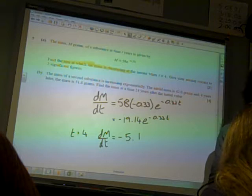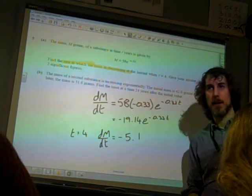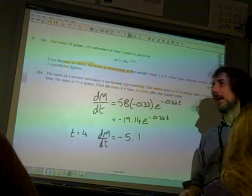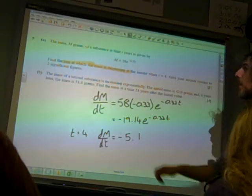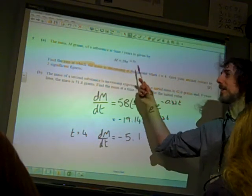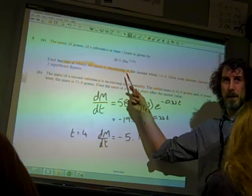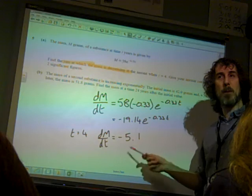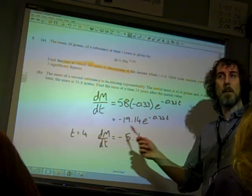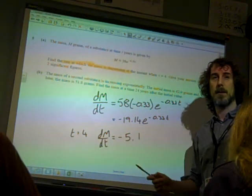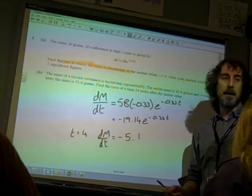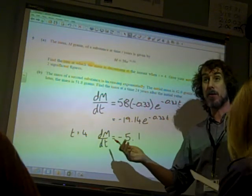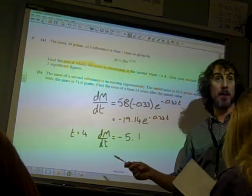This is one of these things where I would like to be pedantic, but the example really weren't. And I would like to think, the question says, find the rate at which the mass is decreasing. So the rate at which the mass is decreasing is 5.1. It's not minus 5.1. But they didn't check. They accepted minus 5.1 or 5.1. Do you get the point? It should have been 5.1, shouldn't it? That's the rate at which it's decreasing.